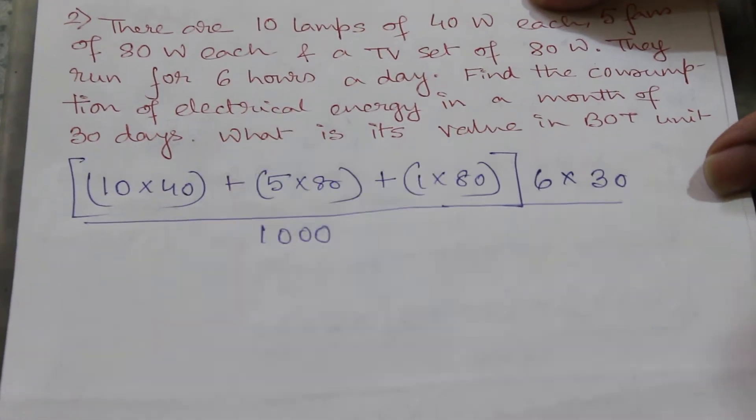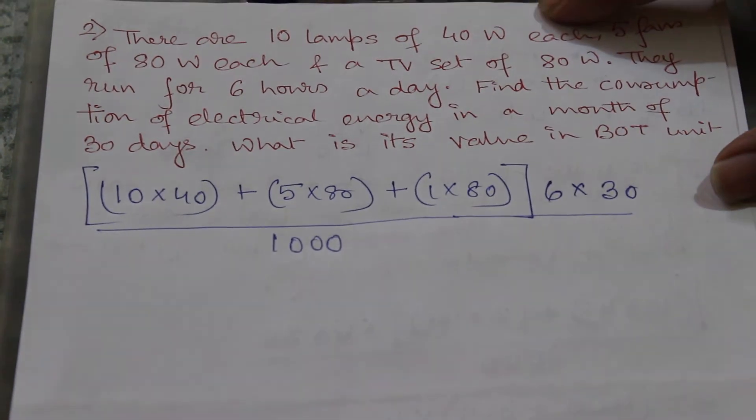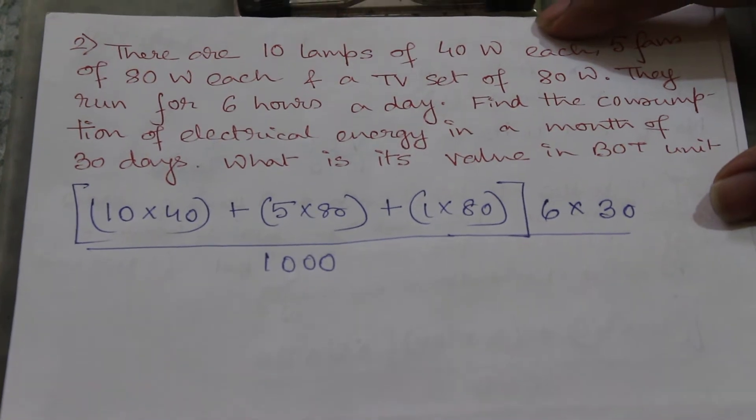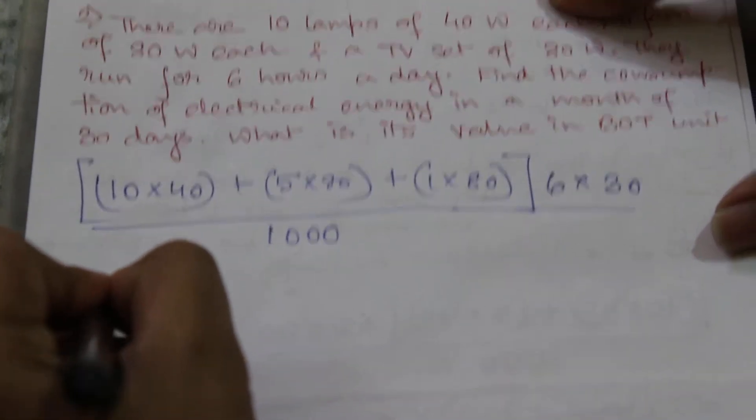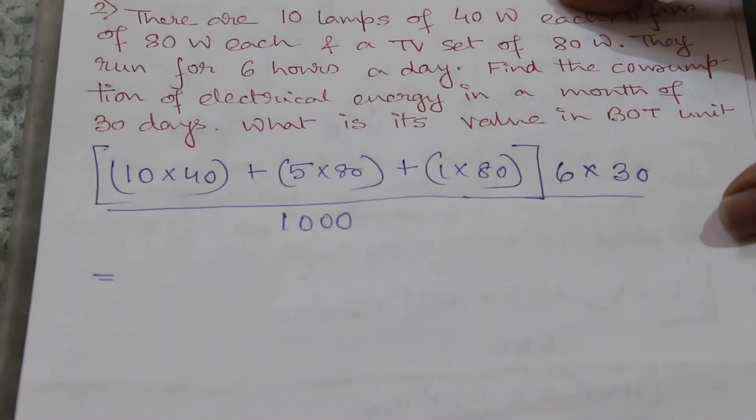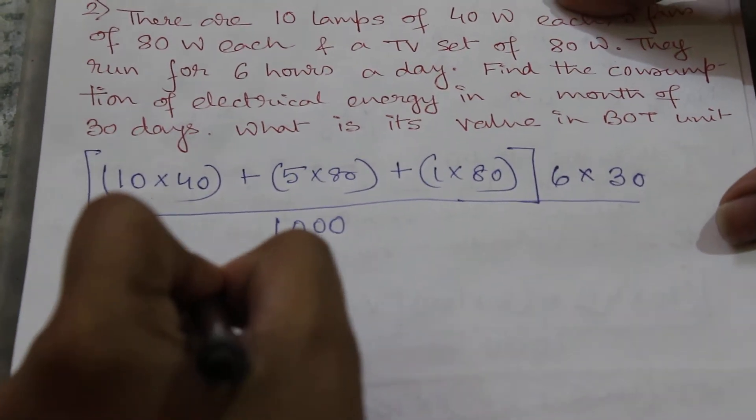So number of BOT units will be equal to this whole thing by thousand. As BOT unit is kilowatt hour, so to convert from watt hour to kilowatt hour, we are dividing this with thousand.